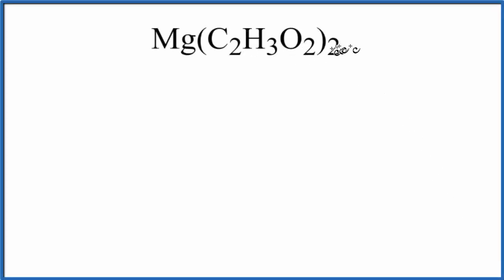In this video, we'll find the number of atoms in Mg(C2H3O2)2. This is magnesium acetate.